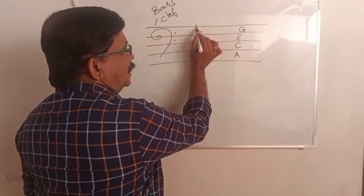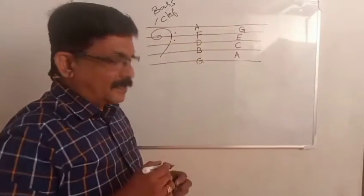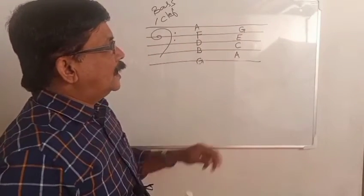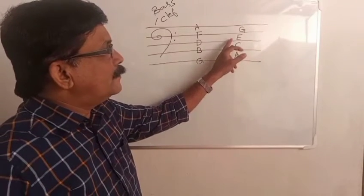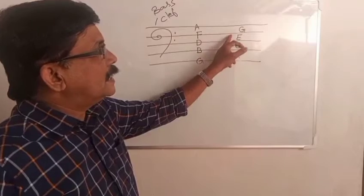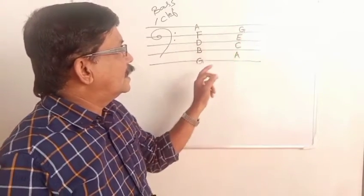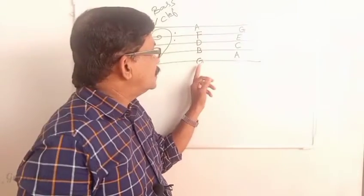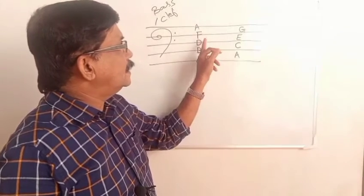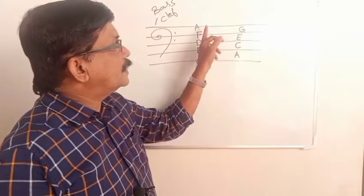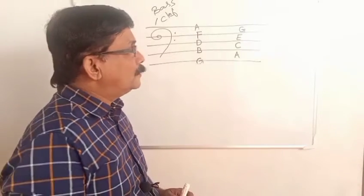The first line is A. The spaces are: 1st space A, 2nd space C, 3rd space E, and 4th space G. The lines are: 1st line G, 2nd line B, 3rd line D, 4th line F, and 5th line A.